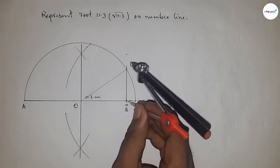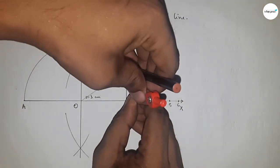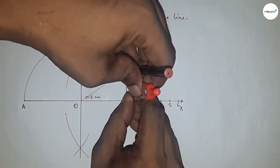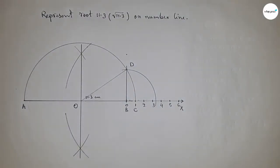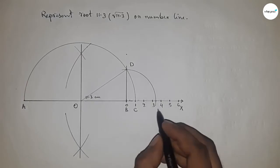Next, taking the length BD by compass to draw an arc which meets the number line at a point B'.